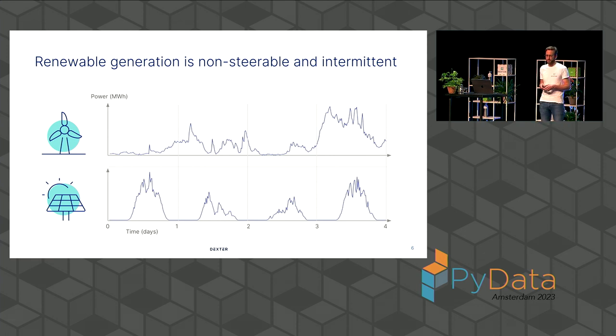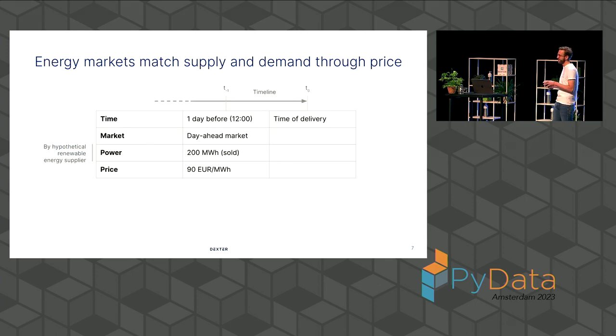And a renewable energy supplier, like here, displayed, needs to tell in advance what they think they'll produce, what they'll generate. And this all happens on the energy markets. So this brings me to energy markets. On these markets, participants can buy and sell energy. And there are many of these markets, advanced markets, but I'll focus on the day ahead.